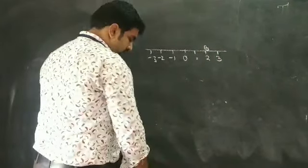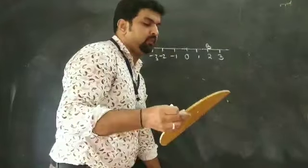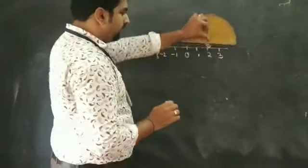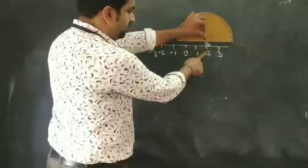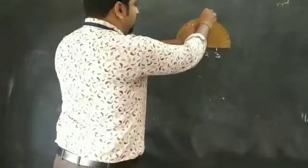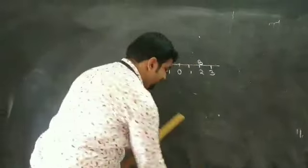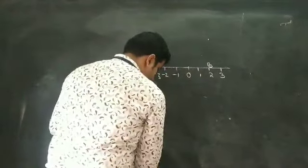And then, take your protractor and keep it in the point B or in the point 2, and mark 90 degrees and draw a straight line.